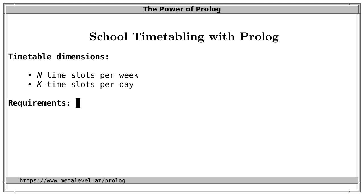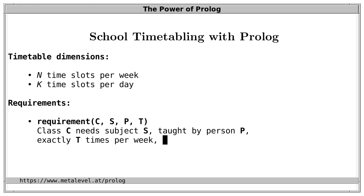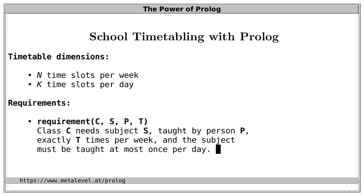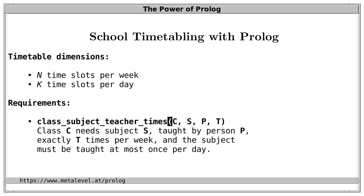The essence of what we want from a school timetable can be expressed as a set of requirements of the form class, subject, teacher, times — a Prolog fact meaning that class c needs subject s taught by person p exactly t times per week, with the subject taught at most once per day. 'Requirement' is a bad name because it tells us nothing about the arguments, so let's instead use 'class_subject_teacher_times'.